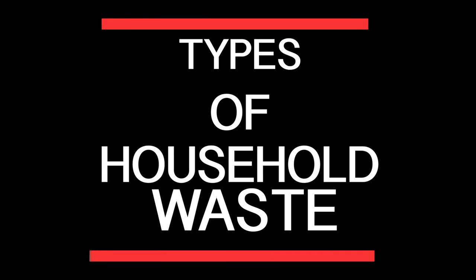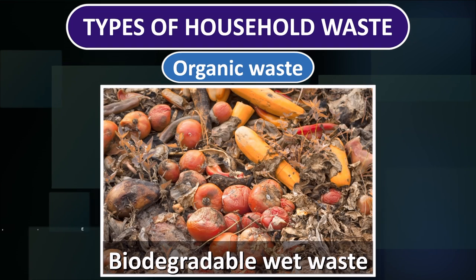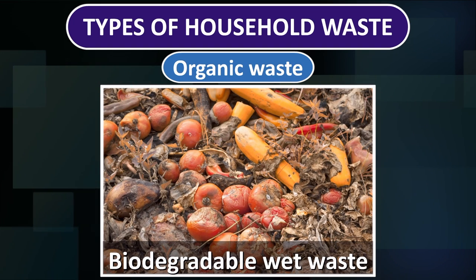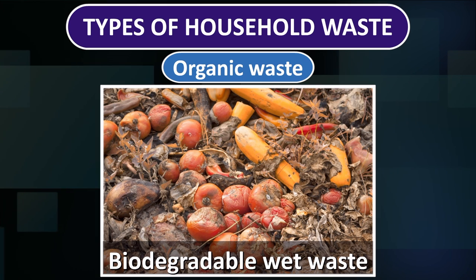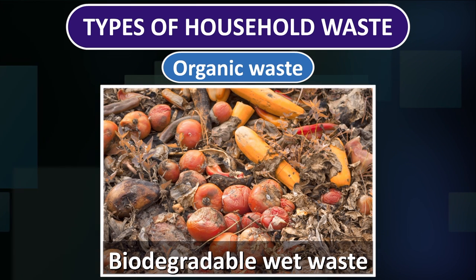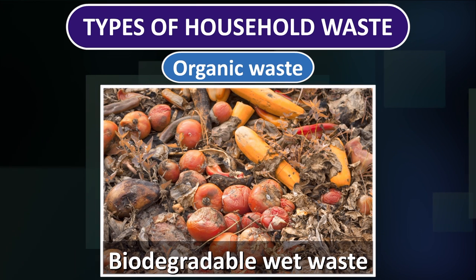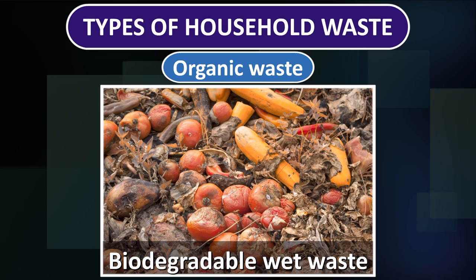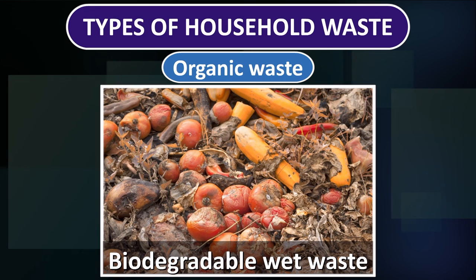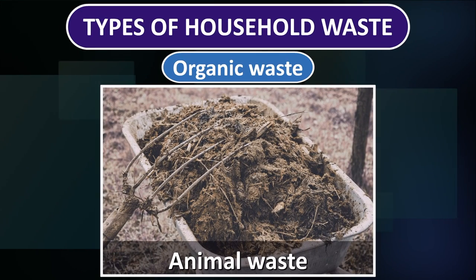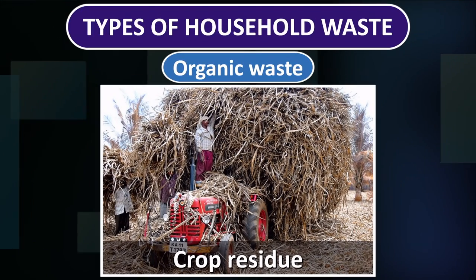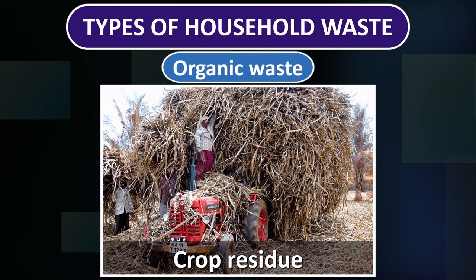Types of Household Waste — Organic Waste: Organic waste is also biodegradable, i.e., wet waste such as rotten fruit and vegetables, peels and other kitchen waste, animal waste, weeds acquired from fields and crop residues, etc.